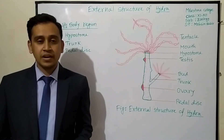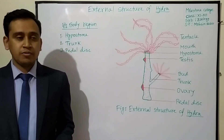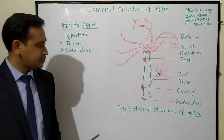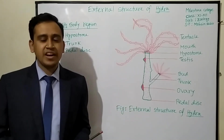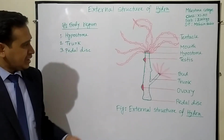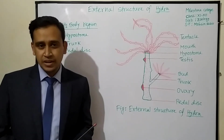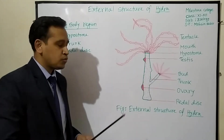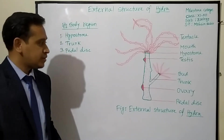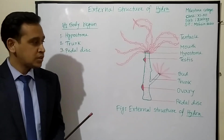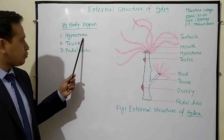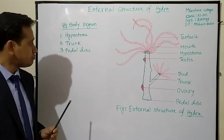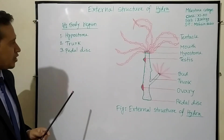Now, the external structure of Hydra. The body of Hydra is cylindrical in shape. It has a remarkable contraction and expansion power. It can be seen with the naked eye because it is 10 to 30 millimeters in length and 10 millimeters in width. The body of Hydra is radially symmetrical and is divided into three regions: hypostome, trunk, and pedal disc.